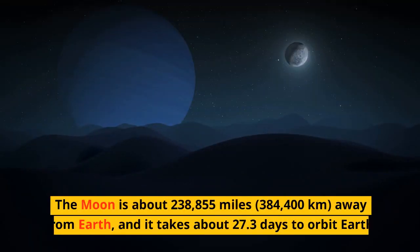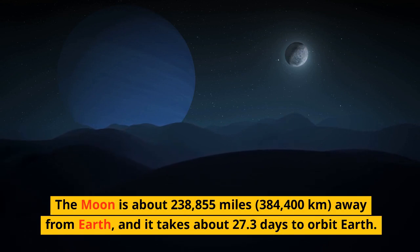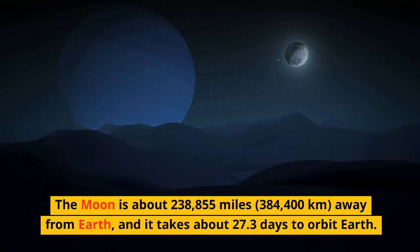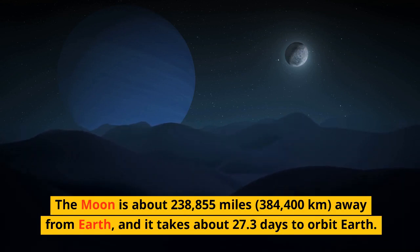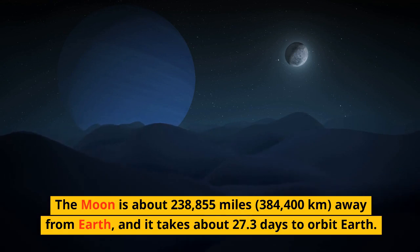The Moon is about 238,855 miles (384,400 kilometers) away from Earth, and it takes about 27.3 days to orbit Earth.